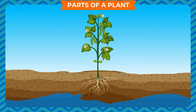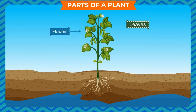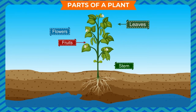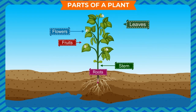PARTS OF A PLANT: A plant has many parts. The Leaf is the flat green part which prepares food for the plant. The Flower produces fruits. The Fruit protects the seed. The Stem carries food and water to all parts of the plant and helps it to stand erect.